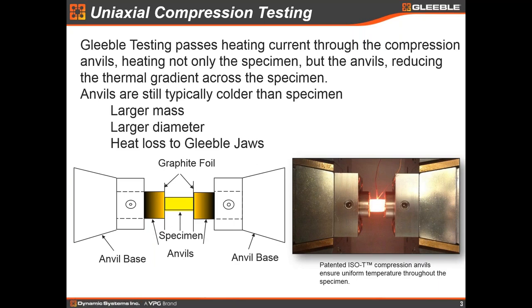Most of you are probably familiar, but I'm going to go very briefly over exactly how we do uniaxial compression testing on the Gleeble platform. The Gleeble is unique in that it uses direct resistance heating to heat the sample. When we're talking uniaxial compression testing, that same current that heats the sample also heats the anvils that are being used to compress the sample. So we are sending the current through the sample and then through the opposing anvil. That current will heat all those elements in that train that have resistance.